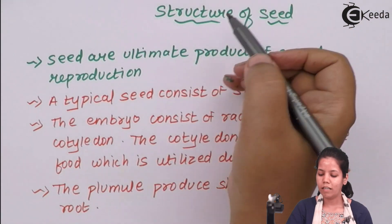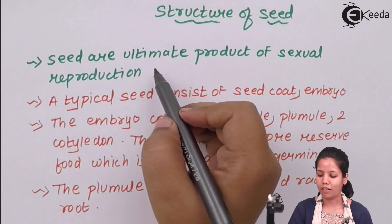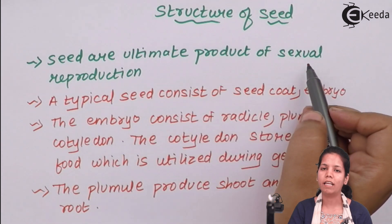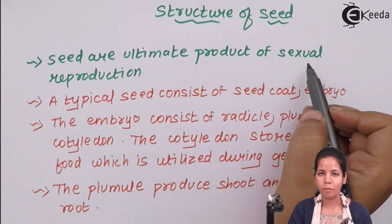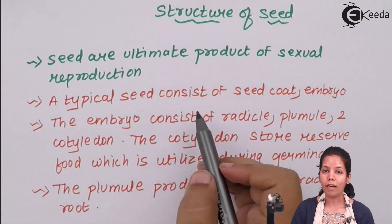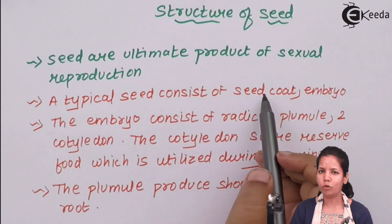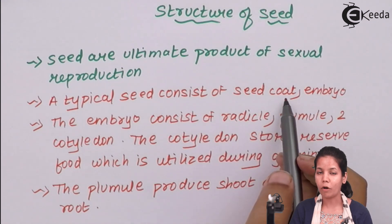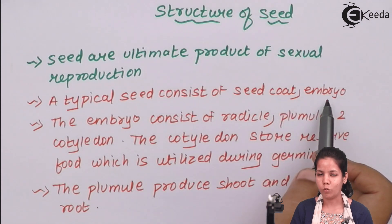Seeds are basically the byproduct of sexual reproduction in flowering plants or angiosperms. A typical seed consists of two major important parts: the seed coat or outer covering and the embryo.